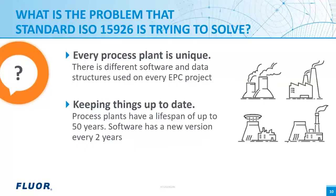Let's start with talking about what problem we are trying to solve. Every process plant is unique — there is different software and data structures used on every EPC project. Every EPC project requires engineering; the location causes differences, the feedstock or product or process causes differences, and there is different equipment. This means there is no former design to be taken or only partly reused, and due to the changing nature of software, there are different brands with different data structures in their databases.